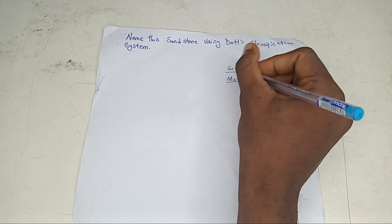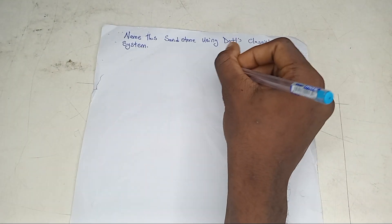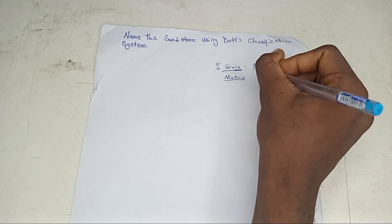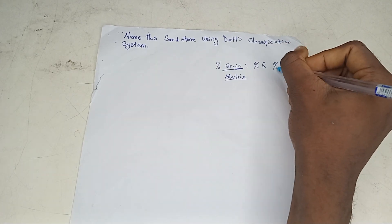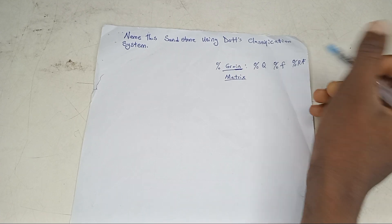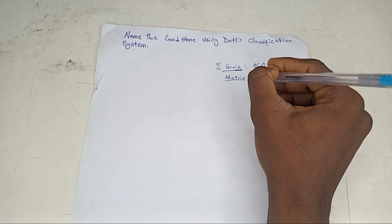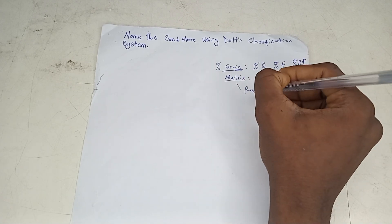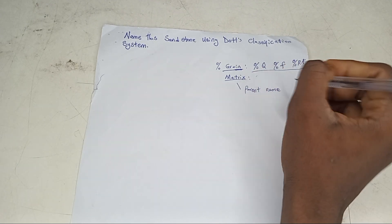These are two things that determine the name. The percentage of each grain — the percentage of quartz, percentage of feldspar, and percentage of rock fragments in that particular sandstone. The matrix determines the parent's name, and the grain determines the sub-name.